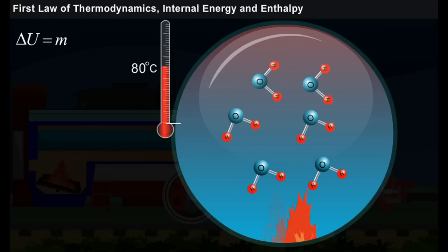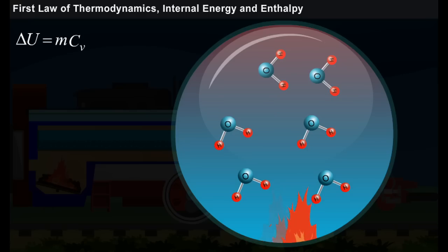Thus the change in the internal energy delta U is the product of mass of water and specific heat capacity and change in temperature.